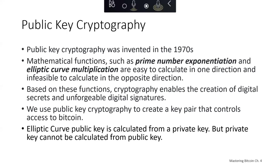Public key cryptography was invented in the 1970s and is a mathematical foundation for computer and information security. Many technologies we know on the internet today rely on public key cryptography. Since its invention, several suitable mathematical functions such as prime number exponentiation and elliptic curve multiplication have been discovered. These mathematical functions are practically irreversible — easy to calculate in one direction and extremely difficult to calculate in the opposite direction. Bitcoin uses elliptic curve multiplication as the basis for its cryptography.